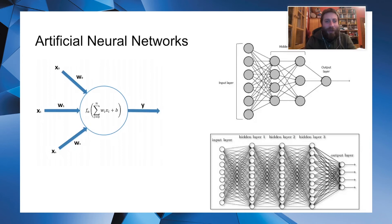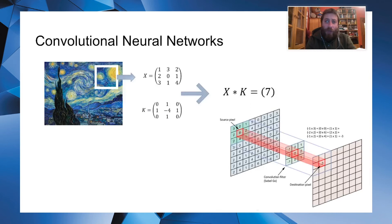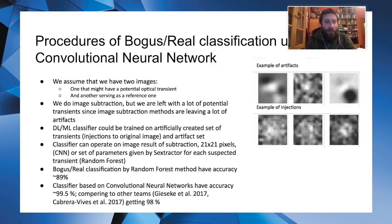So what we do is use neural networks, especially convolutional neural networks. Using training and test sets, we were very surprised that when we just cut a piece of picture 21 by 21 pixels, we got around 99.5% accuracy. So we were down to almost one or two candidates per image that we need to investigate. This was really interesting.